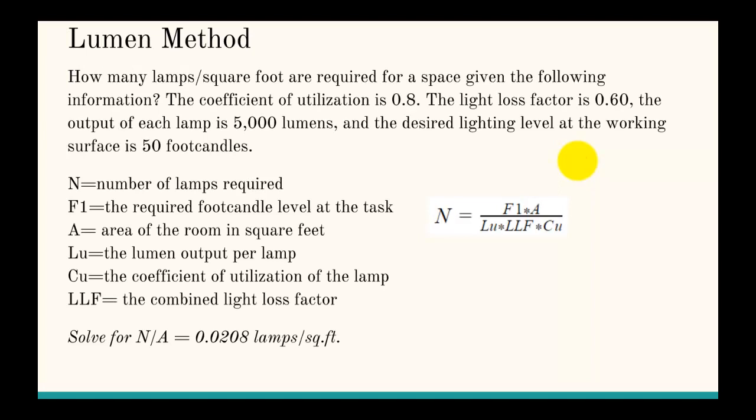Let's look at this problem. How many lamps per square foot are required for a space given the following information? The coefficient of utilization is 0.8, the light loss factor is 0.6, the output of each lamp is 5,000 lumens, and the desired lighting level at the working surface is 50 foot-candles.